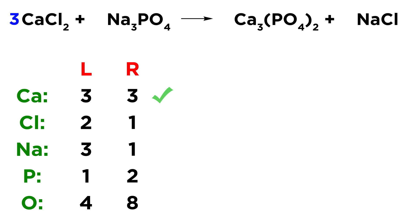But we must realize we've also made it so that there are six chlorine atoms on the left, because we have Cl2 and three of those — two chlorine atoms per formula unit times three gives six chlorine atoms. We'll come back to chlorine. There's actually a simpler way to handle phosphorus and oxygen together, because they're both part of the phosphate polyatomic ion, which doesn't get split up. We can balance the entire phosphate ion at the same time.